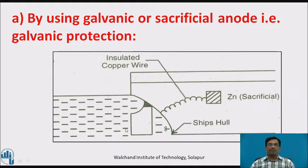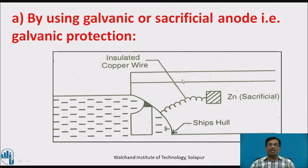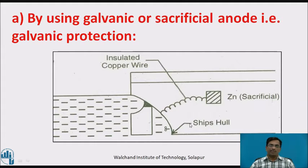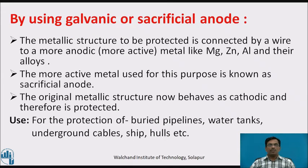Galvanic protection can be explained with the help of this diagram. Suppose this is the hull of a ship. As we know, ships are in ocean water, meaning all the suitable conditions are available for corrosion. This metallic material is always in contact with sea water, which is full of minerals, and at the same time it is humid in nature and the temperature is also somewhat favorable. Under such circumstances, corrosion occurs very quickly and corrosion products form. This ship can be protected by the galvanic or sacrificial anode method. In this case, the metallic structure to be protected is connected by wire to a more anodic, that is more active, metal like magnesium, zinc, aluminium, and their alloys.